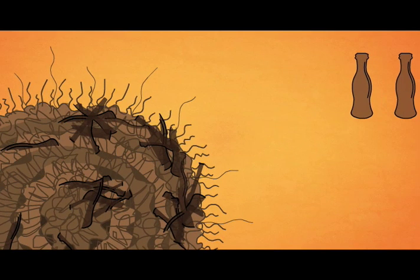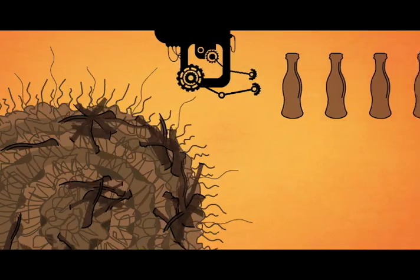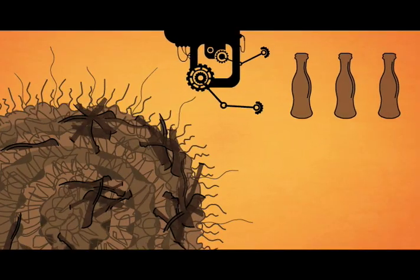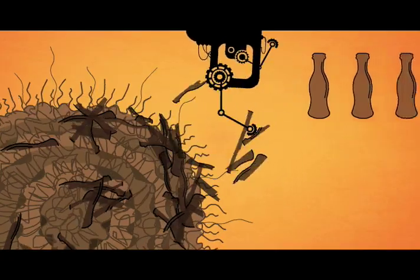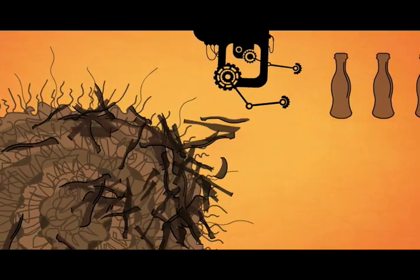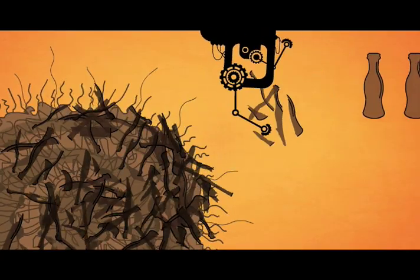Think of APP proteins as glass bottles that need to be recycled after each use. But something goes terribly wrong. Just before they get melted down, the bottles are broken into sharp and sticky pieces, beta-amyloid fragments, which then form into plaques.